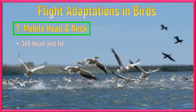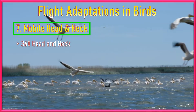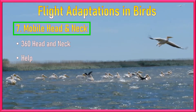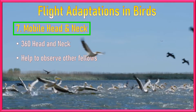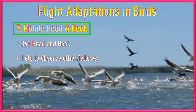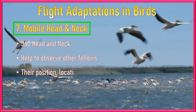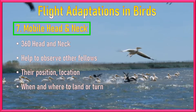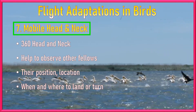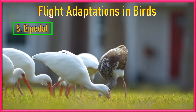Number 7: Mobile Neck and Head. The head and neck are movable and can turn up to 360 degrees. This is helpful in flight because while flying, birds can observe other flocks, their position and location, which helps to communicate where to land, when to go up, or when to turn.